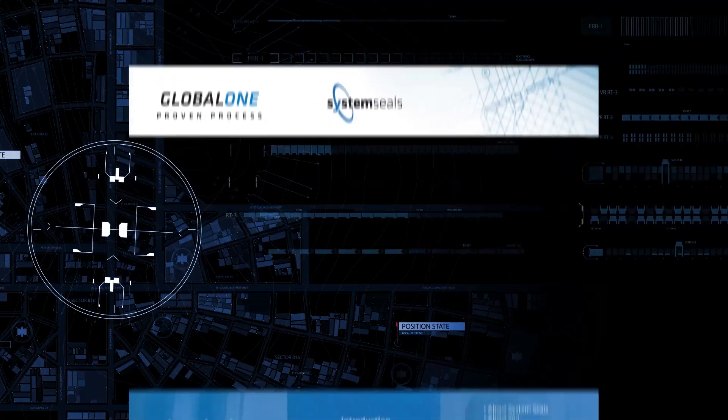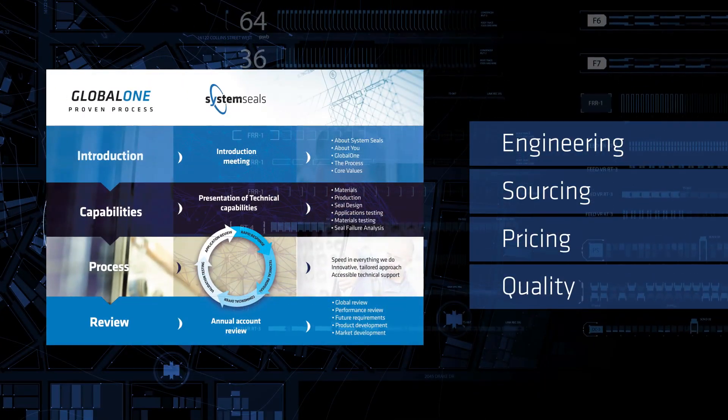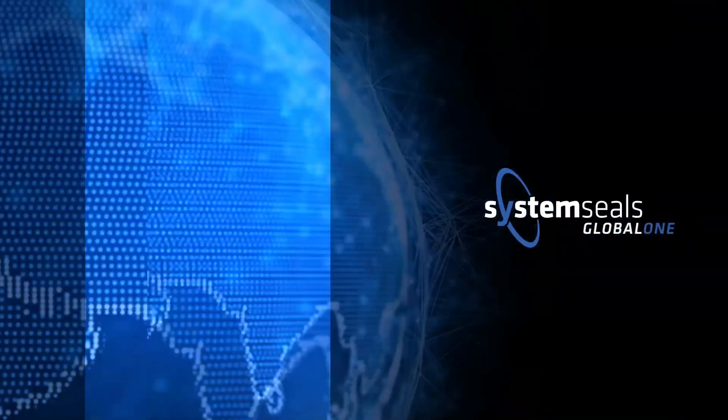Say you need technical expertise for an application in Europe, but your manufacturing and procurement resides in Asia. The Global One team from SystemSeals can help you with the entire process. From engineering to sourcing, pricing and quality assurance, irrespective of where in your organization the bill is getting paid.